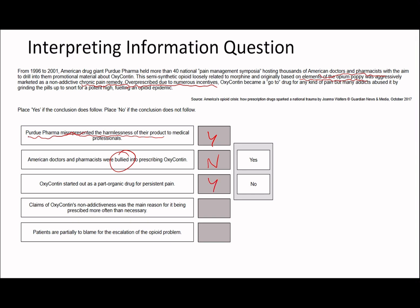Claims of OxyContin's non-addictiveness was the main reason for it being prescribed more often than necessary. With this one, this is one of the classic tricks you can't fall for. Here it says it was over-prescribed due to numerous incentives. It never says that was the main reason. It literally says here there were numerous incentives for why it was over-prescribed, but it doesn't say this is the main one. These kind of classic questions where yes, they talk about the non-addictiveness specifically in the past and they don't talk about the other reasons. But that doesn't necessarily mean it was the non-addictiveness specifically which is why it was prescribed more often than necessary.